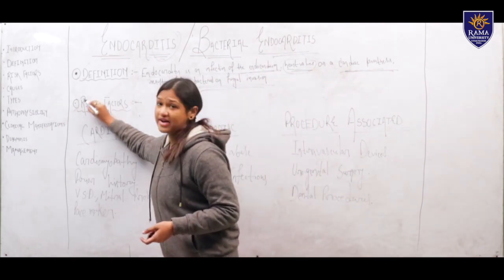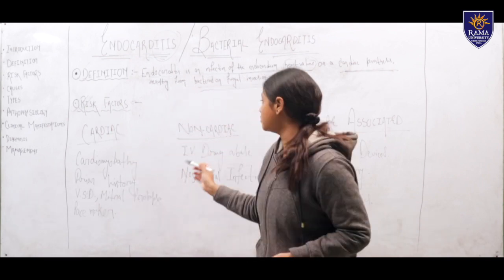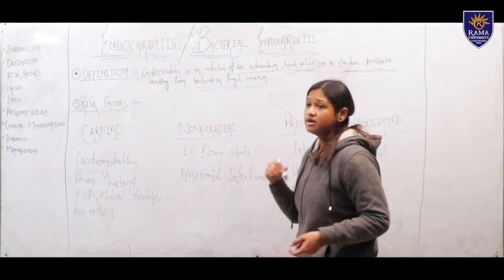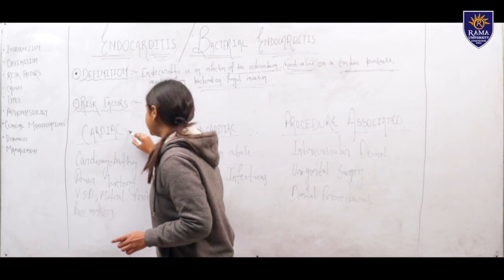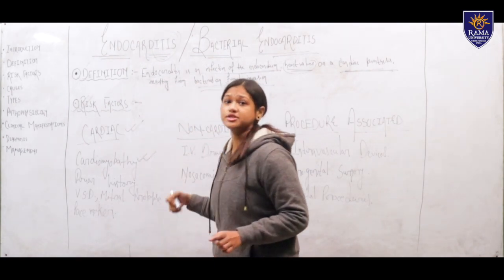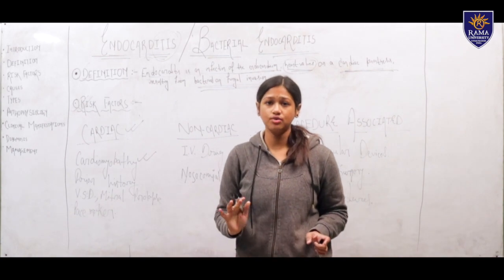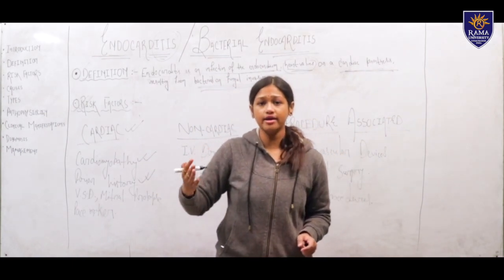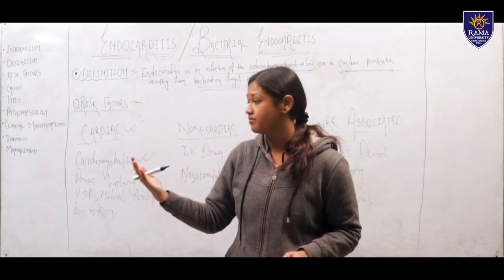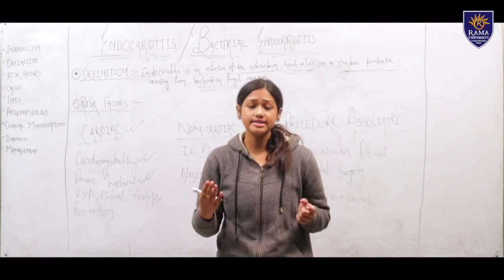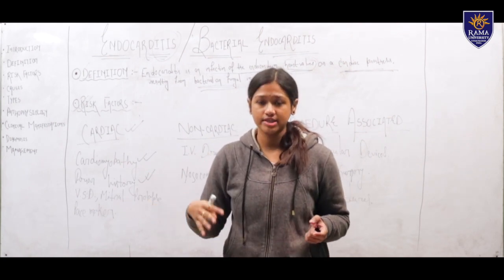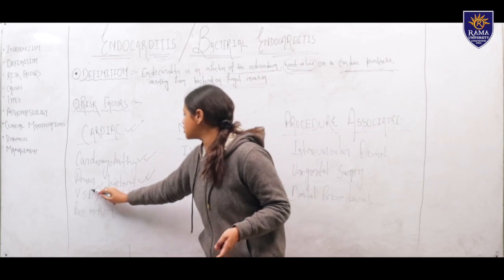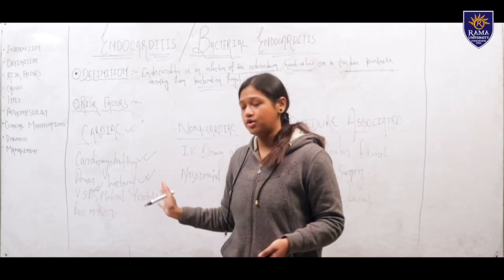Looking at the risk factors, there are certain cardiac conditions, non-cardiac conditions, and procedure-related situations. For cardiac risk factors: first is cardiomyopathy, a medical condition related to the cardiovascular system. Second is prior history — if a patient was already affected with endocarditis previously, they are more open to recurring infection in the future. Third is VSD, ventricular septal defects, which is also a risk factor for endocarditis.